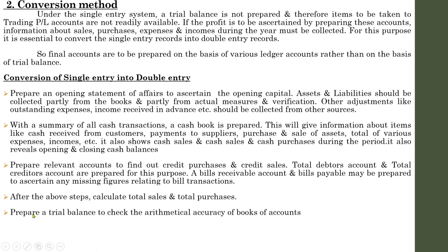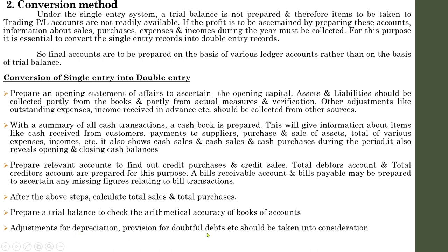Once you have found total sales and total purchases, you can prepare a trial balance to check the arithmetical accuracy of the books of accounts — though in practical cases you need not prepare a trial balance for this purpose. Additionally, adjustments for depreciation, provision for doubtful debts, discount received, discount allowed, commission received, and commission allowed must also be considered. On the basis of all this information, we can finally prepare a trading profit and loss account and balance sheet.